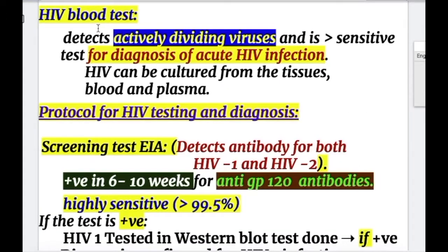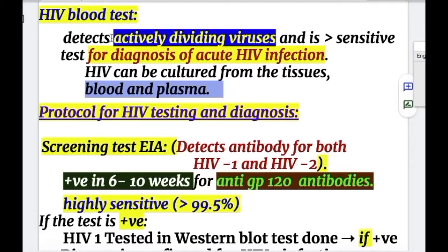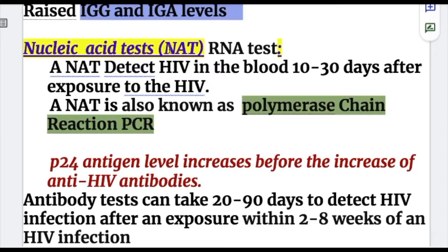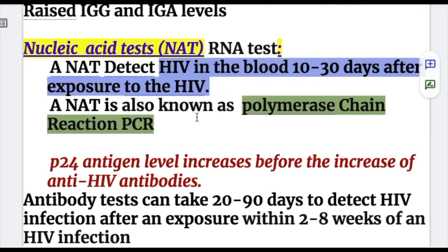The HIV blood test detects actively dividing viruses and is more sensitive for diagnosing acute HIV infection. HIV can be cultured from tissues, blood, and plasma. The nucleic acid test (NAT) or RNA test detects HIV in the blood 10 to 30 days after exposure, and is also known as the polymerase chain reaction (PCR) test.